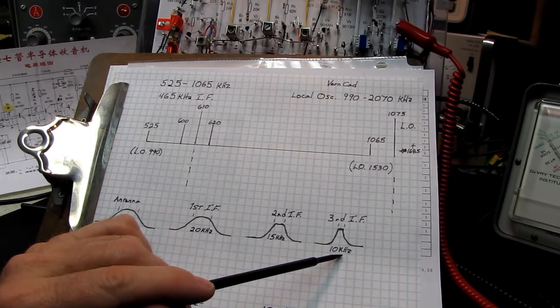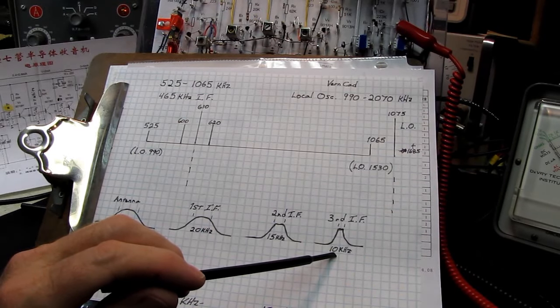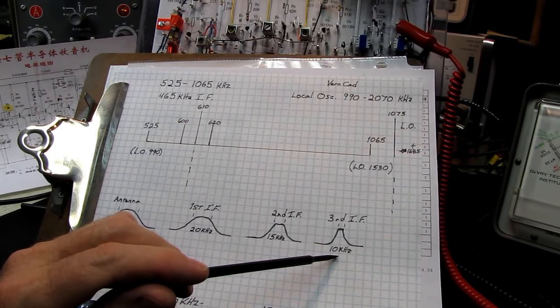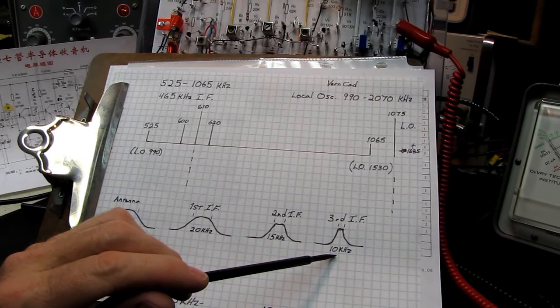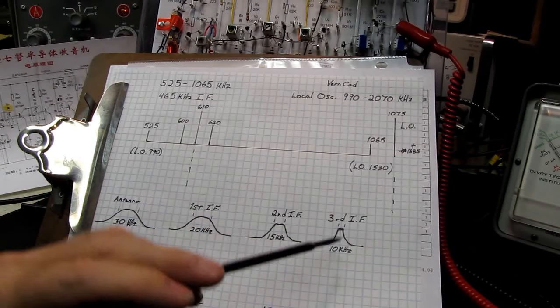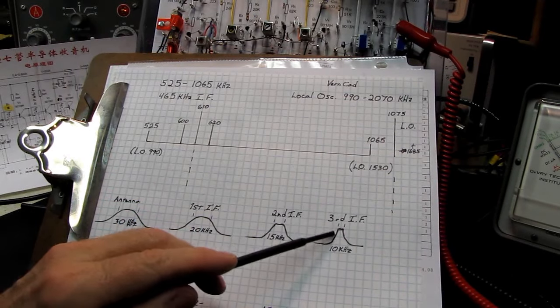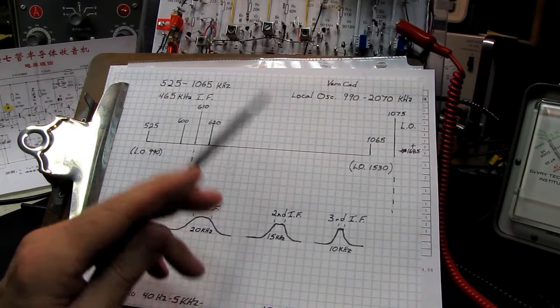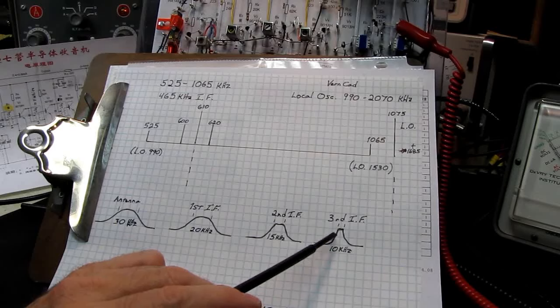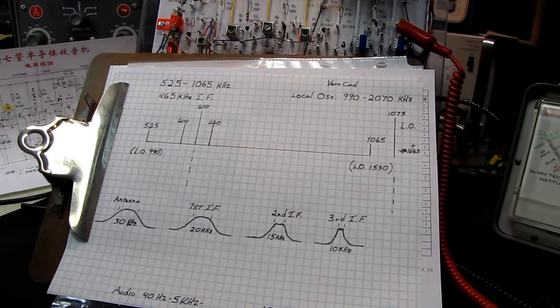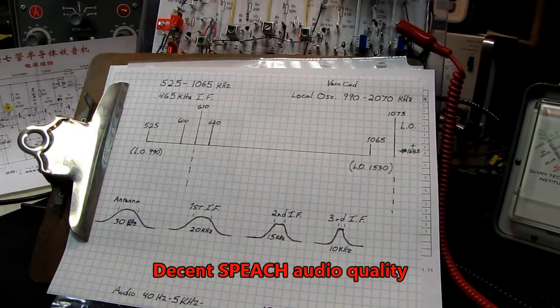Shortwave receivers will reduce this even further. A sideband receiver would reduce this down to about 6 kilohertz. Morse code receivers, or CW receivers, will reduce this down as little sometimes as 250 hertz. Extremely narrow bandwidth. You couldn't understand any speech at that bandwidth, but it's good enough for receiving Morse code. And it rejects all the noise on either side. But on a typical AM radio like this one, it probably never gets any tighter than about 10 to 12 kilohertz by the time we get to the third IF.